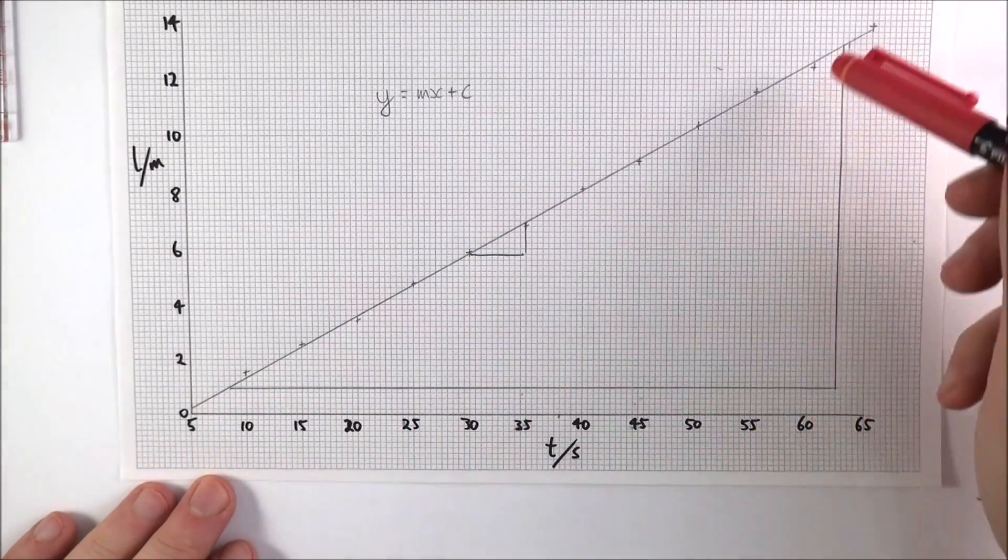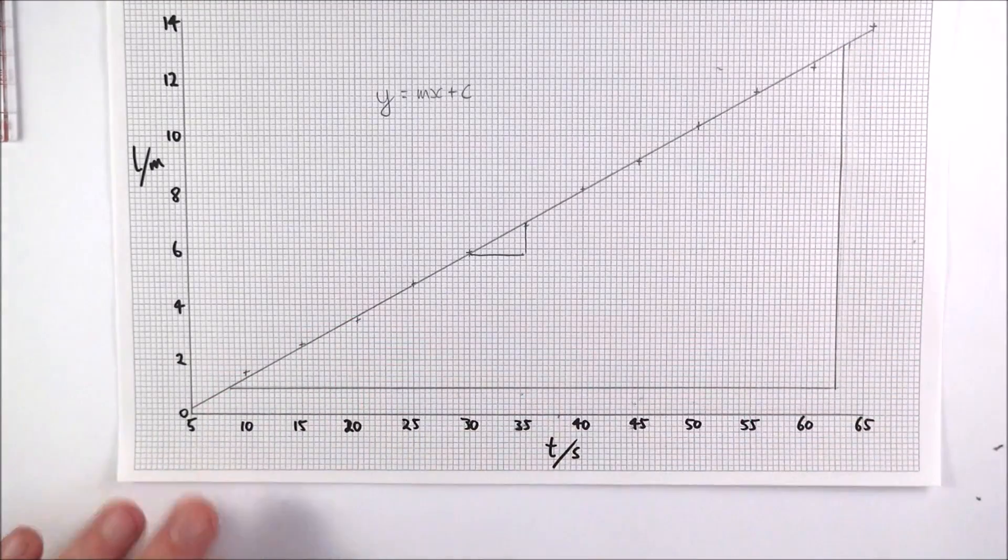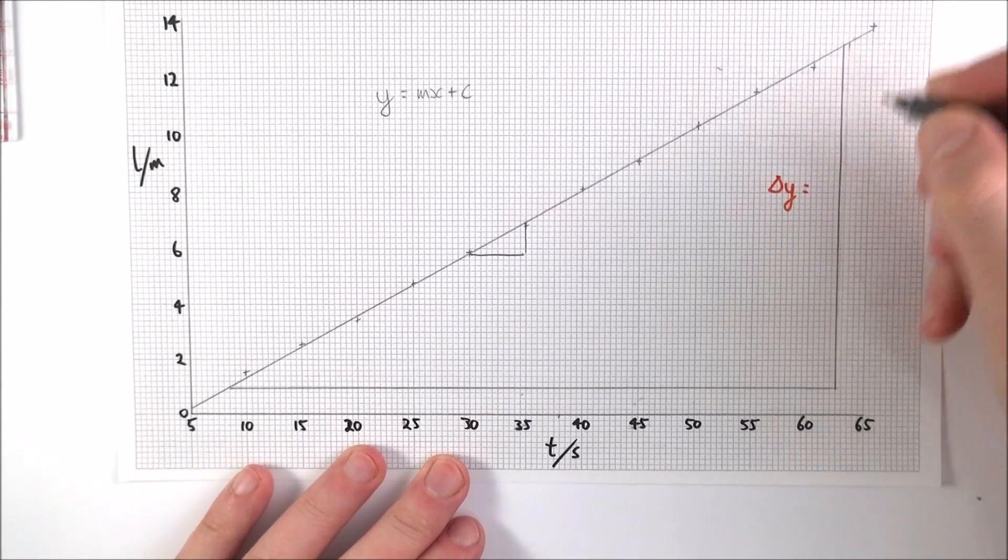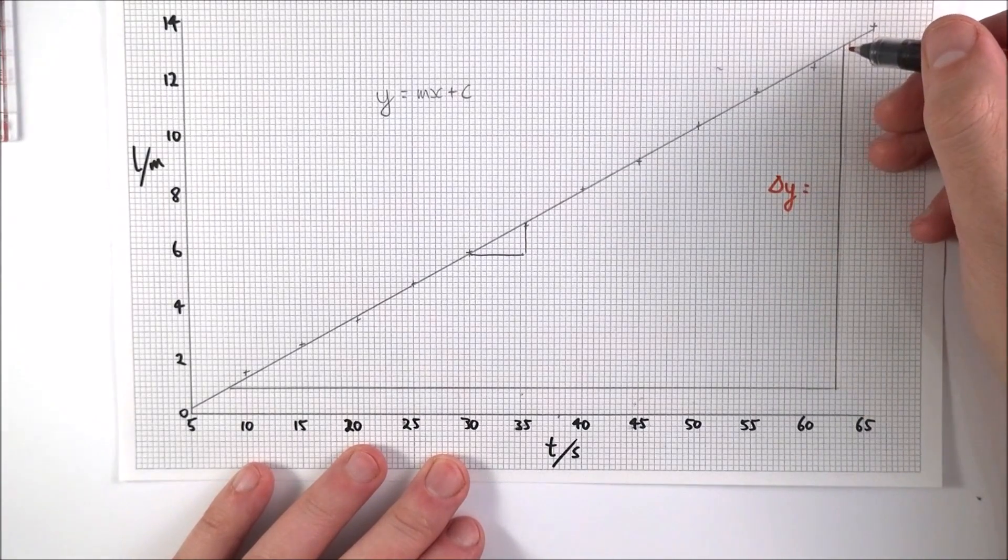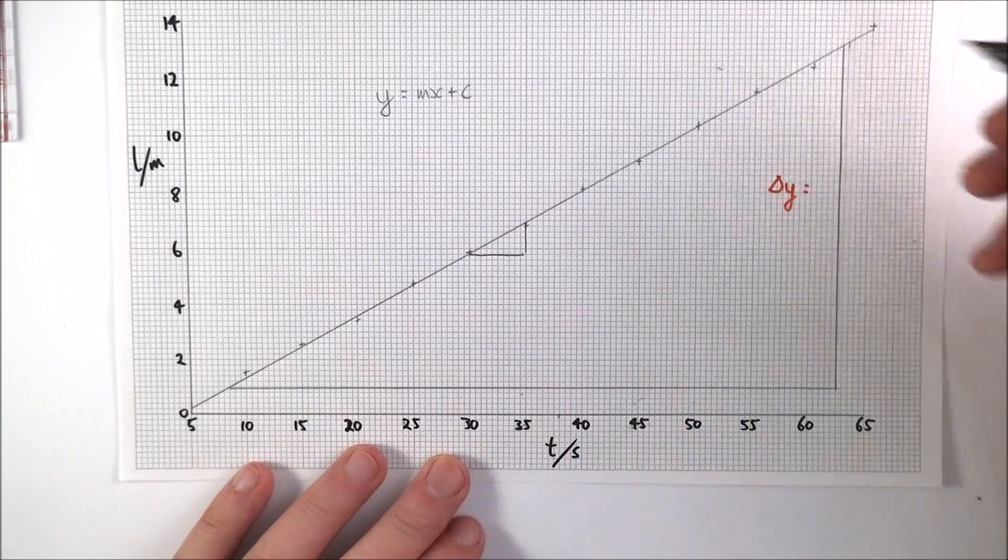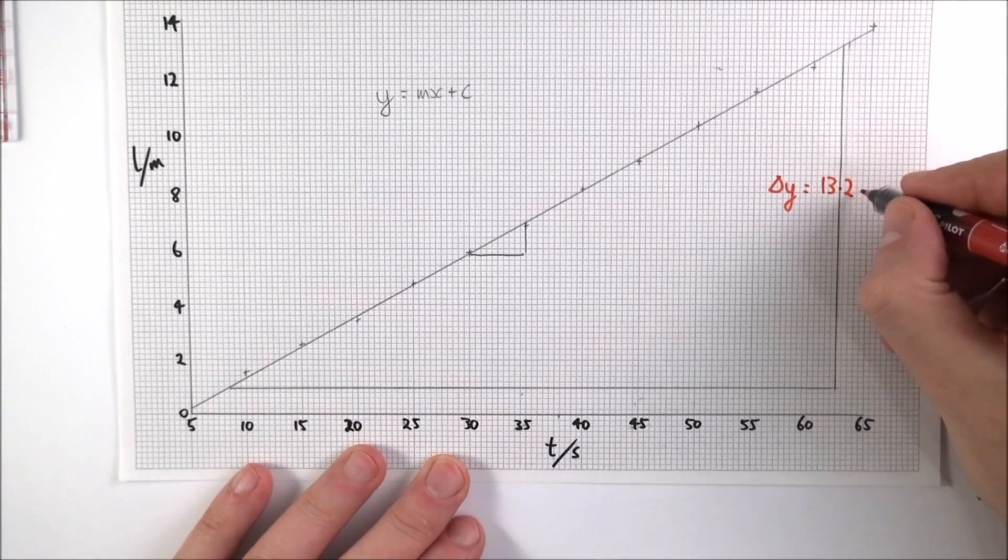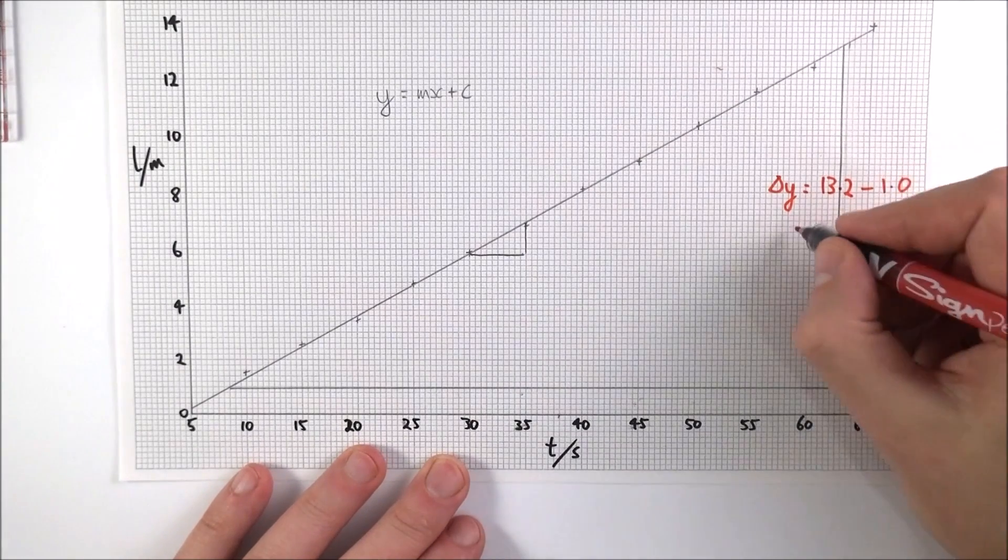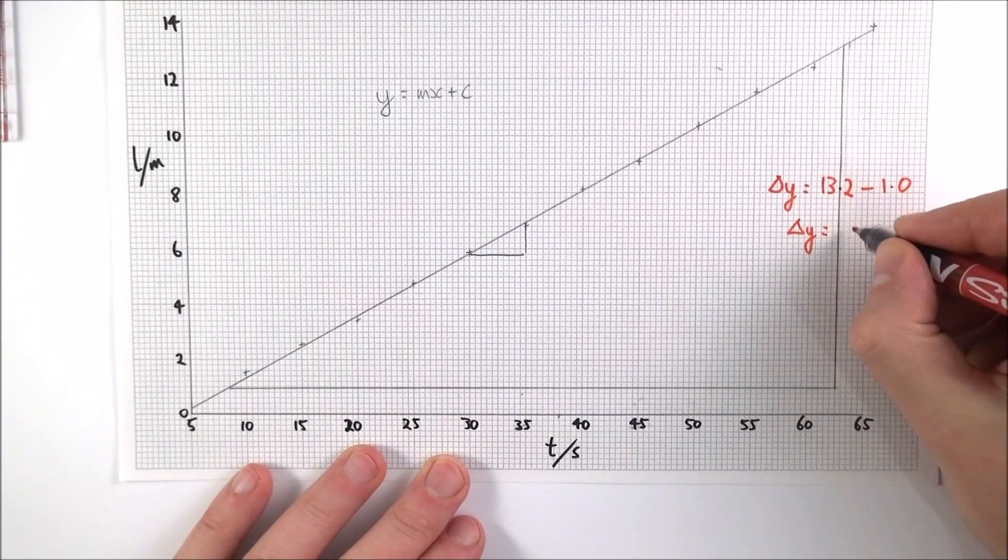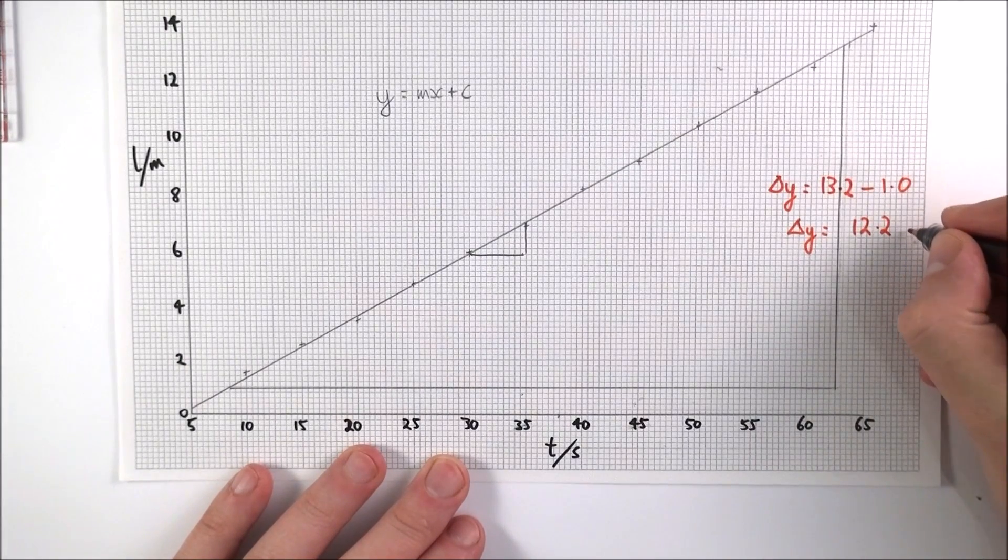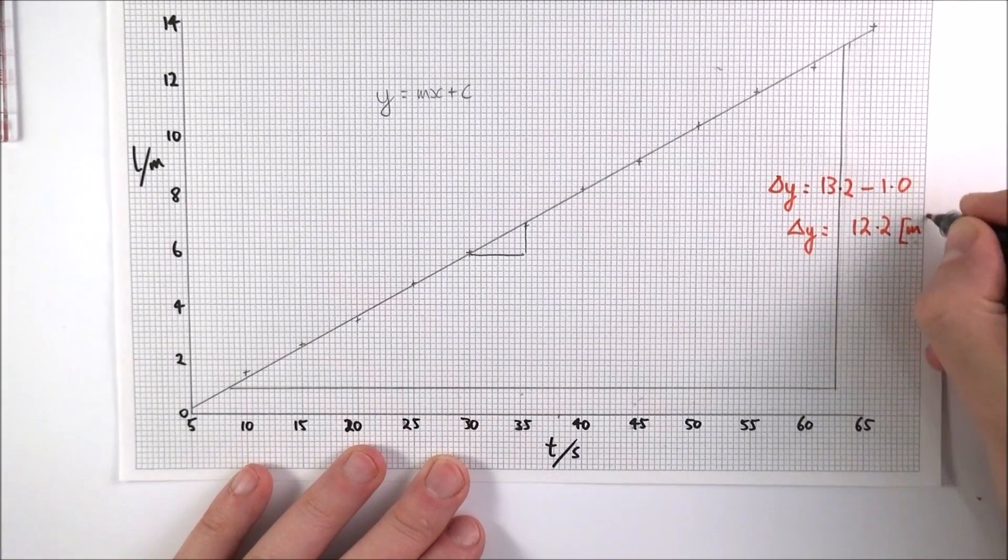What I can then do is look at the change in y value and the change in x value. So first of all my change in y value, it starts off at a value of 13.2 and it ends at a value of 1.0. And therefore my change in y value is equal to 12.2 and the units for that are meters.